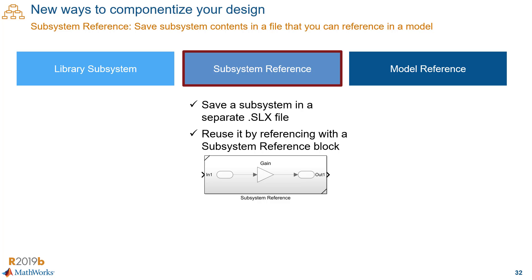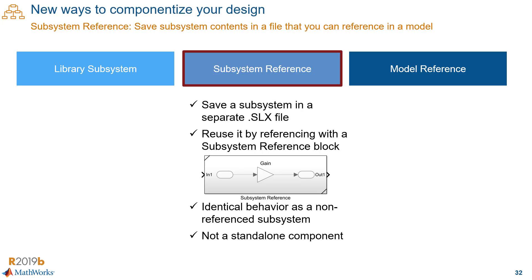There are a few things to keep in mind. When you simulate a model, a reference subsystem behaves just like a regular subsystem. A subsystem reference is not a standalone component — it doesn't have all the attributes of a model, like a model workspace or configuration parameters, so it cannot be analyzed standalone. It requires a parent model or a test harness to simulate. It is also context-dependent, meaning it will adapt to the context of the parent model, inheriting things like sample times and signal properties. The motivation with subsystem reference is to better support team collaboration and content reuse.